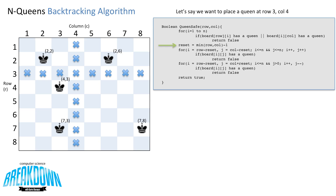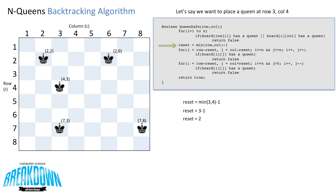I have a value here called reset, which is used for checking diagonals and placing the starting positions. Reset is equal to the minimum value of the row and column minus 1. So the minimum value between 3 and 4 is 3, minus 1, giving reset a value of 2. Now it starts another loop checking the diagonal from the top left to the bottom right. i starts at row minus reset, which is 3 minus 2 equals 1. j starts at column minus reset, which is 4 minus 2 equals 2. So we check if row 1, column 2 has a queen — and it does not.